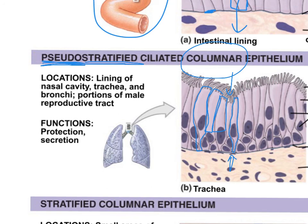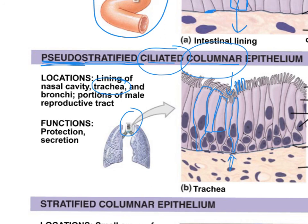We find pseudostratified ciliated columnar epithelium in areas like the trachea. Looking at the apical surface, we see long finger-like projections — cilia. Cilia move things across the surface of the cell; in the trachea they constantly move mucus and dust back up into your mouth so you can spit it out or swallow it. On your lab list, this can simply be written as pseudostratified epithelium, since pseudostratified epithelia are always ciliated and always columnar.